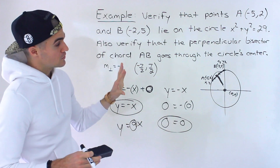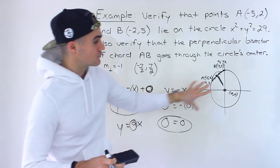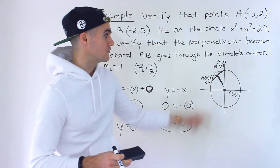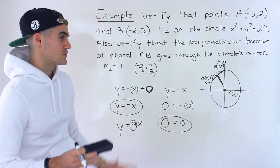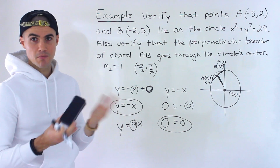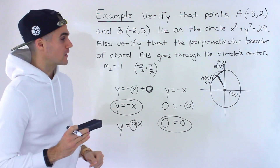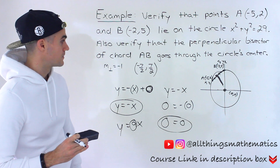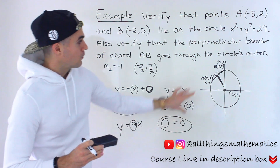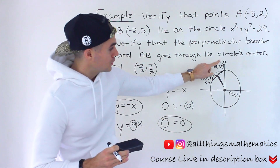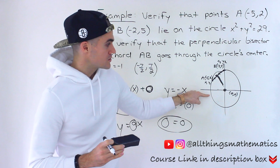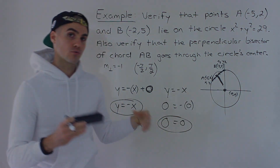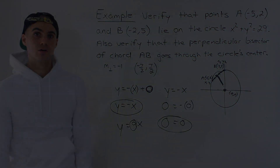Be careful though — there are circles with centers other than 0, 0, and we'll cover those later. In grade 10, you're usually just dealing with circles centered at 0, 0. But the key takeaway is: no matter what chord you draw on a circle, the perpendicular bisector of that chord always goes through the center of the circle.